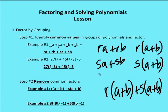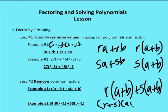Now we'll move into factoring by grouping, which tends to be more difficult for Algebra 2 students. In example 1: ra plus sa plus rb plus sb. Group ra and rb together — ra plus rb equals r times a plus b. Group sa and sb — sa plus sb equals s times a plus b. Rewriting gives r times a plus b plus s times a plus b, which factors further to r plus s times a plus b.